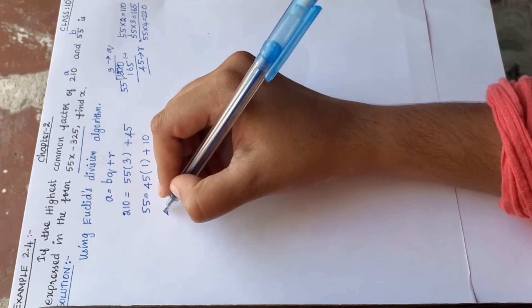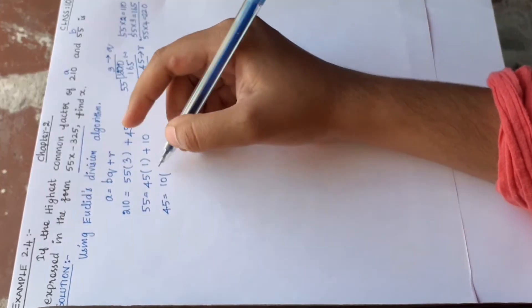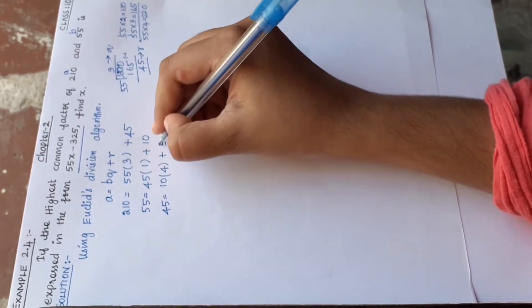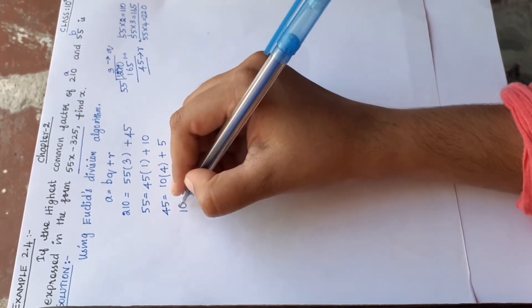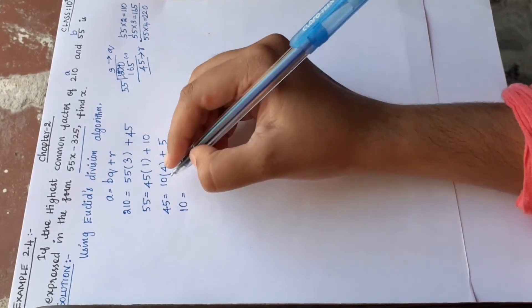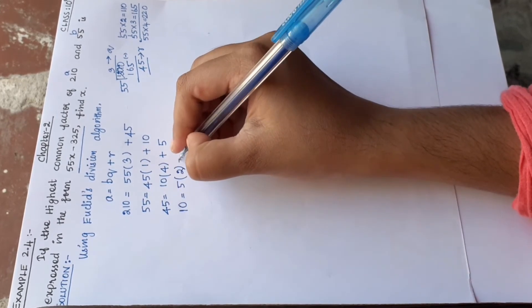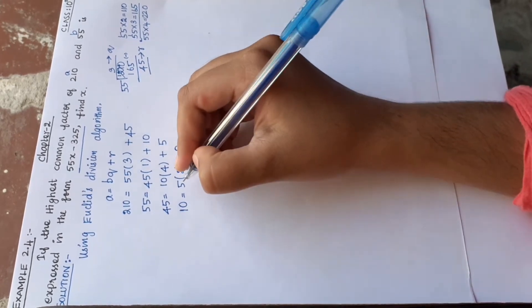Same way, 45 equals 10 × 4 plus 5. So the remainder is 5. Again, 10 equals 5 × 2 plus 0. The remainder is 0.